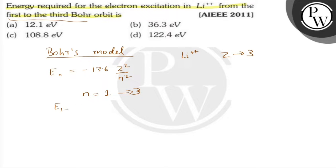So from first to third, that means -13.6 × Z², where Z is 3, so 3². For the final third orbit, n = 3, and for the initial first orbit, n = 1.